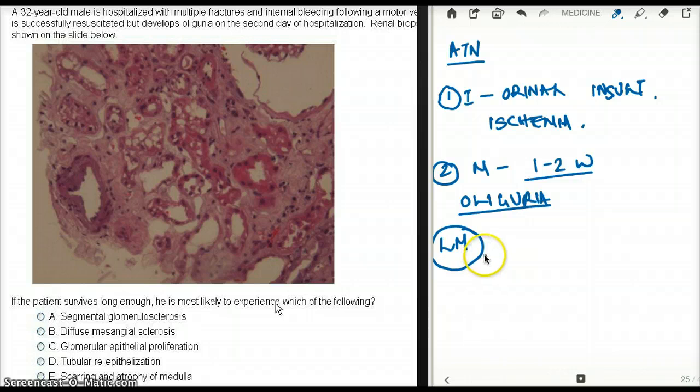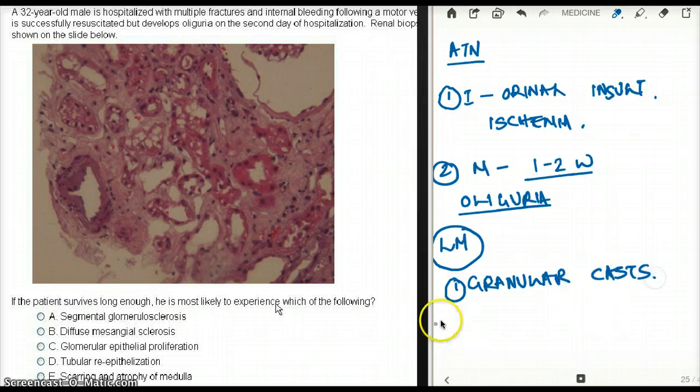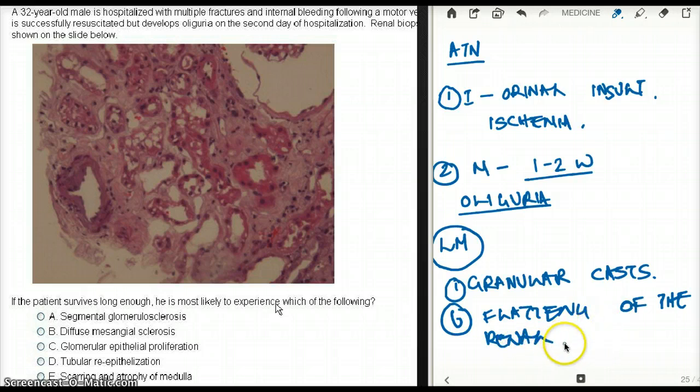Now, on light microscopy, you're going to see a couple of things. First of all, you're going to see something called granular casts. You're going to see granular casts on light microscopy. Another thing you're going to see is, you're going to see flattening. Flattening of the renal tubules. That is also going to be seen. Flattening or wearing away of the renal tubules. And there is also going to be wearing away of basement membrane. That is also going to be seen.